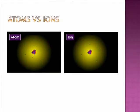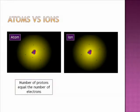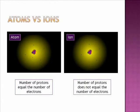As we can see in the picture of the atom, the number of protons equals the number of electrons. However, in the picture of the ion, we see that there are more protons than there are electrons.